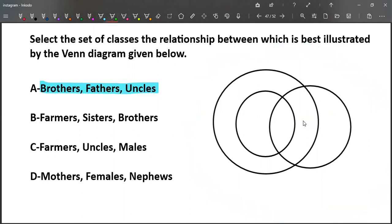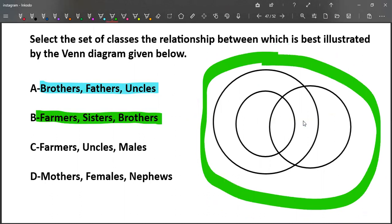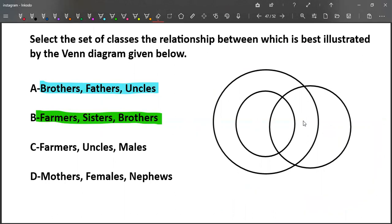Now let us check for farmers, sisters and brothers. Let us check whether this diagram suits for it. Farmers will be both male and female, right? We cannot say all sisters are brothers and all brothers are sisters as well. So this is also not possible.